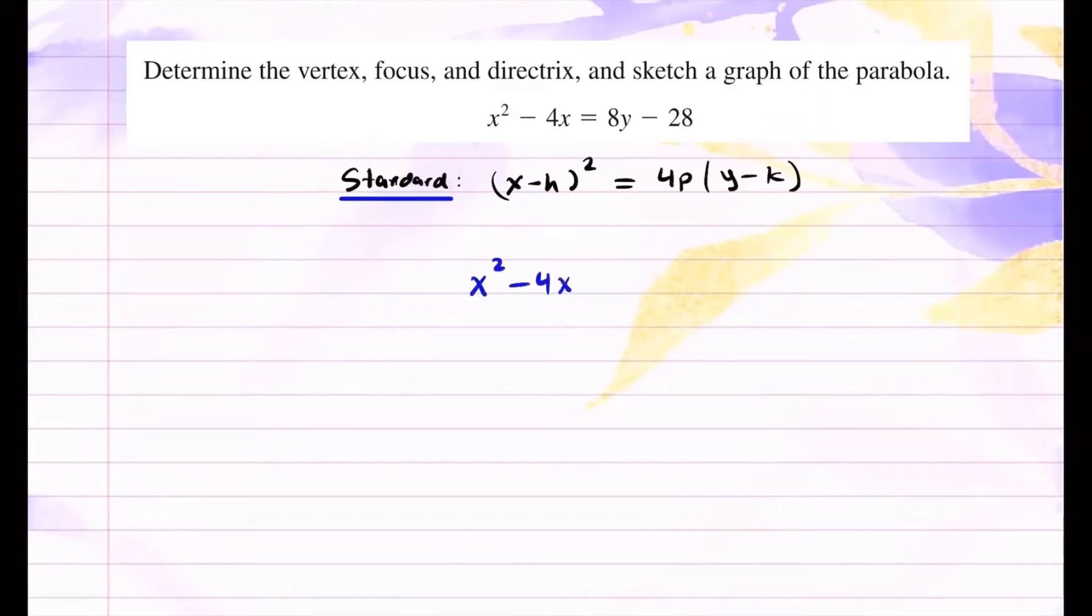We have x² - 4x. I'm going to leave a space. 8y - 28. And now to complete the square, we're going to take half of this number and square it. That's the number we're going to add to both sides of this equation. When I take half of negative 4, I get negative 2. And when I square it, I get 4. So 4 is the number I'm going to add here and here.